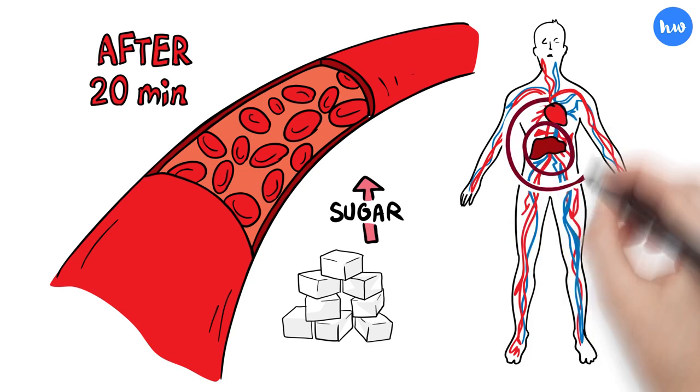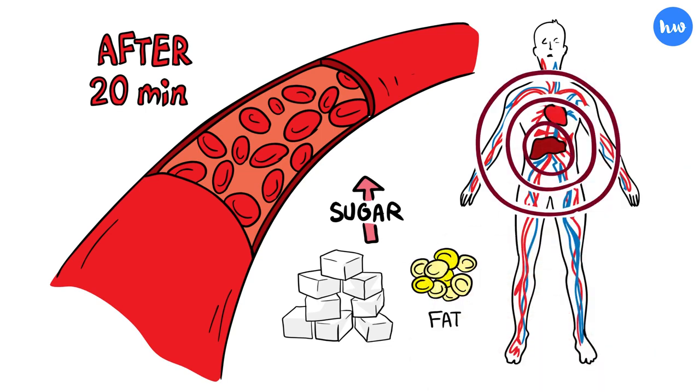After 20 minutes, your blood sugar spikes and sends your liver into overdrive, absorbing mass amounts of sugar into the bloodstream and converting it to fat.